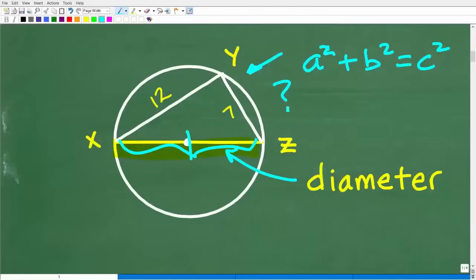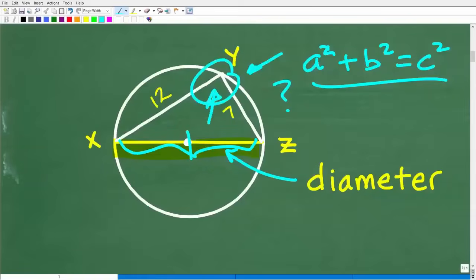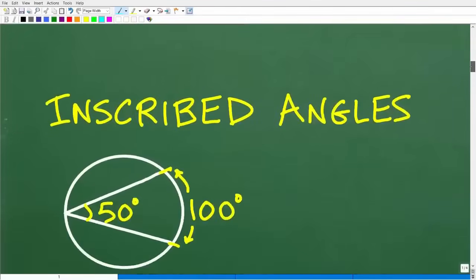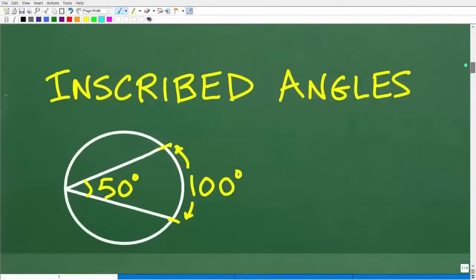If you got this right just by guessing that it might be a right triangle and did the work, that's great. However, if you can't back up your justification that this is a right angle, you're kind of guessing. We need justification about what's going on here. So the topic is inscribed angles.